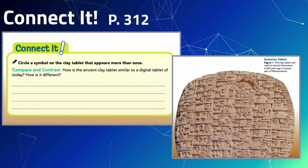On page 312, the connected question asks: how is the ancient clay tablet similar to a digital tablet of today? How is it different? On page 313 you can see a picture of an ancient clay tablet — it was used to record information 6,500 years ago in Sumer, part of Mesopotamia.